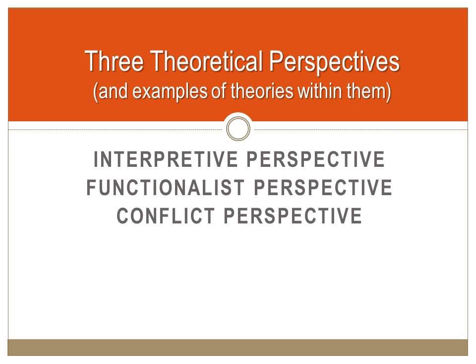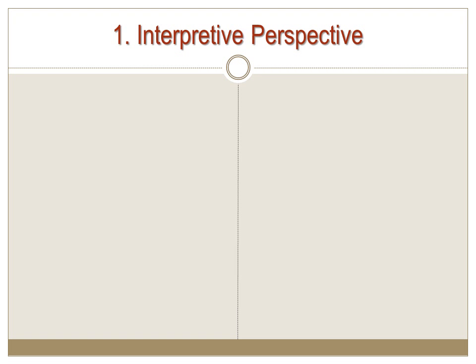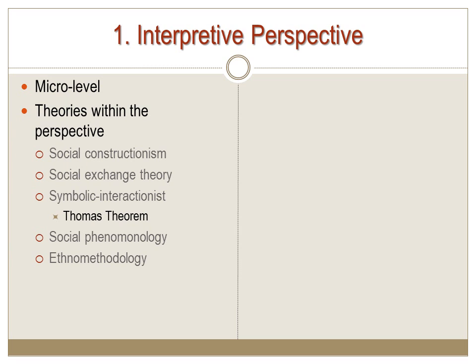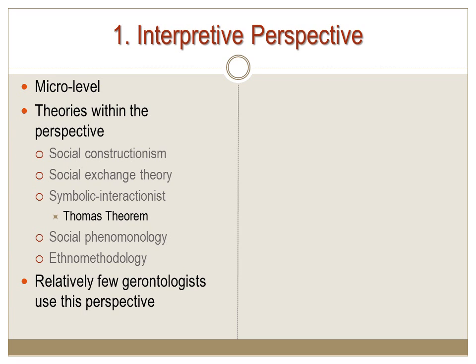Let's cover the three theoretical perspectives in the next few minutes. First, we have the interpretive perspective, which is a micro-level theory. It focuses on the individual — how people relate to each other and how they create social order. It looks at how people define situations. Relatively few gerontologists use this perspective to study older adults.